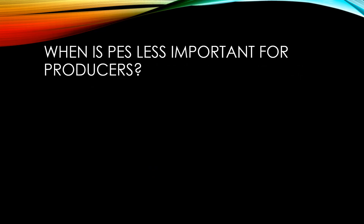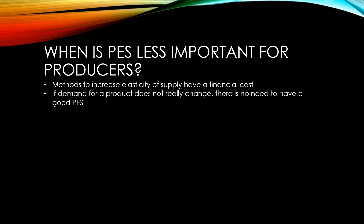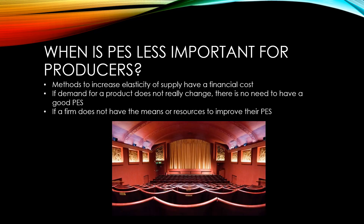We've said that it's generally important for most firms to increase their price elasticity of supply and looked at the ways they can do that. But when is it going to be less important for producers? First, it's important to consider that all of these methods to increase elasticity of supply have a financial cost. So if the demand for a product does not really change, there's no real reason to spend money trying to improve your price elasticity of supply. Price elasticity of supply is also less important for a firm that can't really do anything to improve their elasticity of supply. If we consider a small independent cinema that has a set number of seats, to increase their elasticity of supply they would need a completely new venue. If that's not within the means of the firm, then it's unlikely to happen and they're not really going to consider their price elasticity of supply or how to improve it.